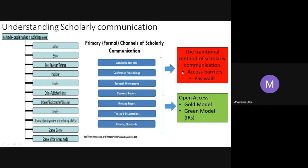There were access barriers and pay walls. When you find a really nice title that relates to what you're working on and you have to log in, most of us just forget about that article. It meant that universities or special libraries paid a lot of money to have access to work that researchers did and hoped people would access for free. Because of that came the open access movement — researchers can produce research and deposit it in an IR, and within a minute the public is able to have access.